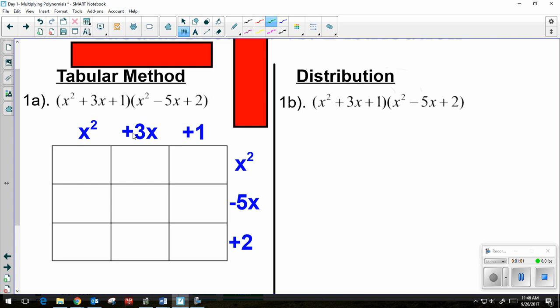So x squared times x squared gives us x to the fourth. x squared times negative 5x gives us negative 5x to the third. x squared times 2 is 2x squared.